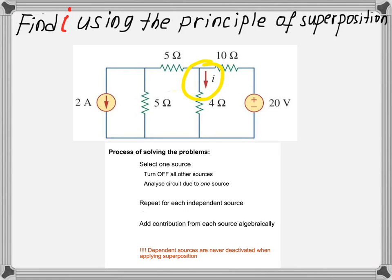Let's see what the main steps are in solving problems using the principle of superposition. First, you need to select one source and turn off all other independent sources. Then you'll get a simple circuit with only one independent source, which you need to analyze to find the unknown parameter. Then repeat the same procedure for all independent sources, and the last step is simply to add up the contribution from each independent source.